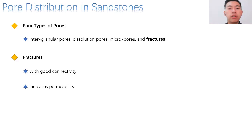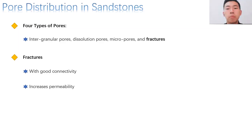This is a brief introduction about pore distribution in sandstones. As you can see, there are four major types of pores, and their connectivity determines the permeability in a rock sample. The permeability of rock samples is not determined entirely by pore size — pore connectivity is a more important factor. Fractures have good connectivity. They co-occur with other types of pores and only make up a small proportion of a rock, but they can really increase the rock's permeability.